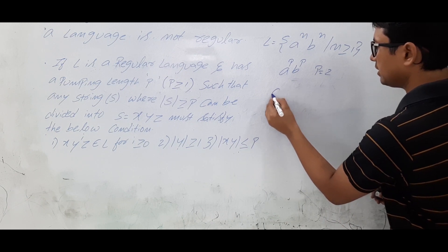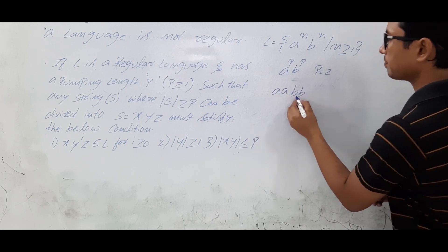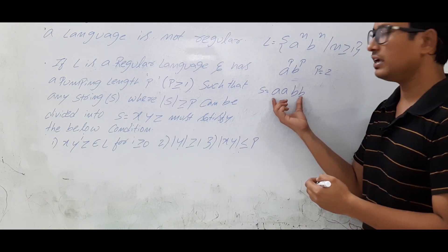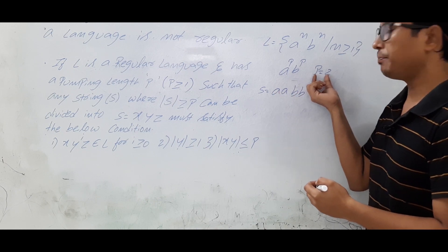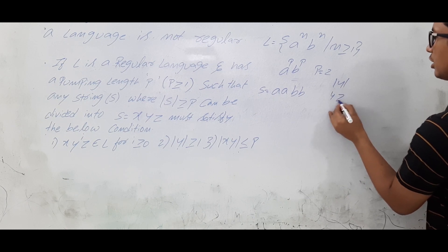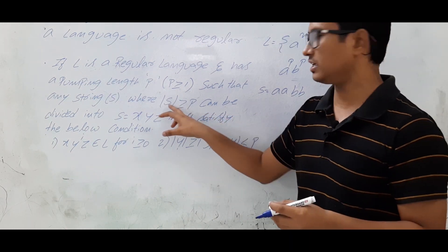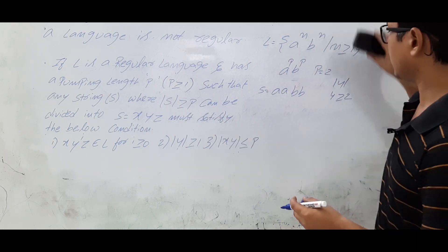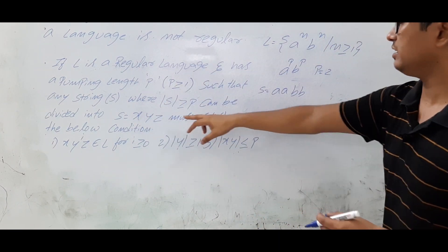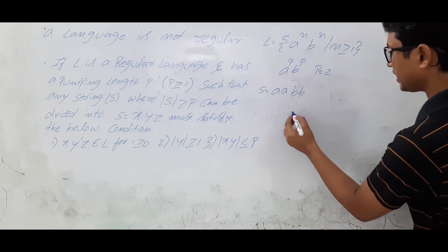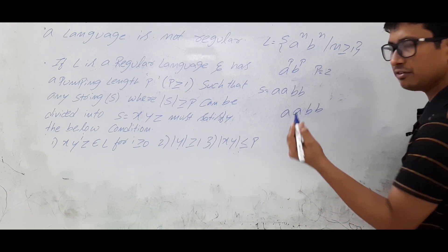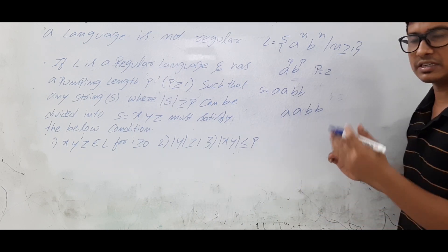I have taken the string 'aabb', which belongs to language L. The length of this string is 4, and the p value is 2, so the length of s is 4 which is greater than or equal to 2 — the condition is satisfied. Now the string s should be divided into xyz. I can divide 'aabb' into three ways, and we will discuss all three ways when discussing the proof.